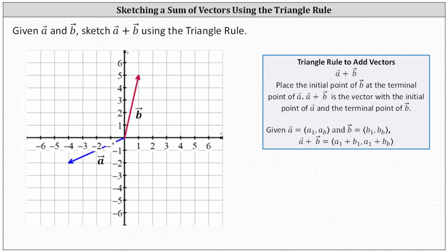Before we do this, let's find the component form for vector a and vector b. Vector b has an x component of positive one and a y component of positive five, and vector a has an x component of negative four and a y component of negative two. To begin forming the triangle, we place the initial point of vector b at the terminal point of vector a, which means the initial point of vector b will be at negative four, negative two.